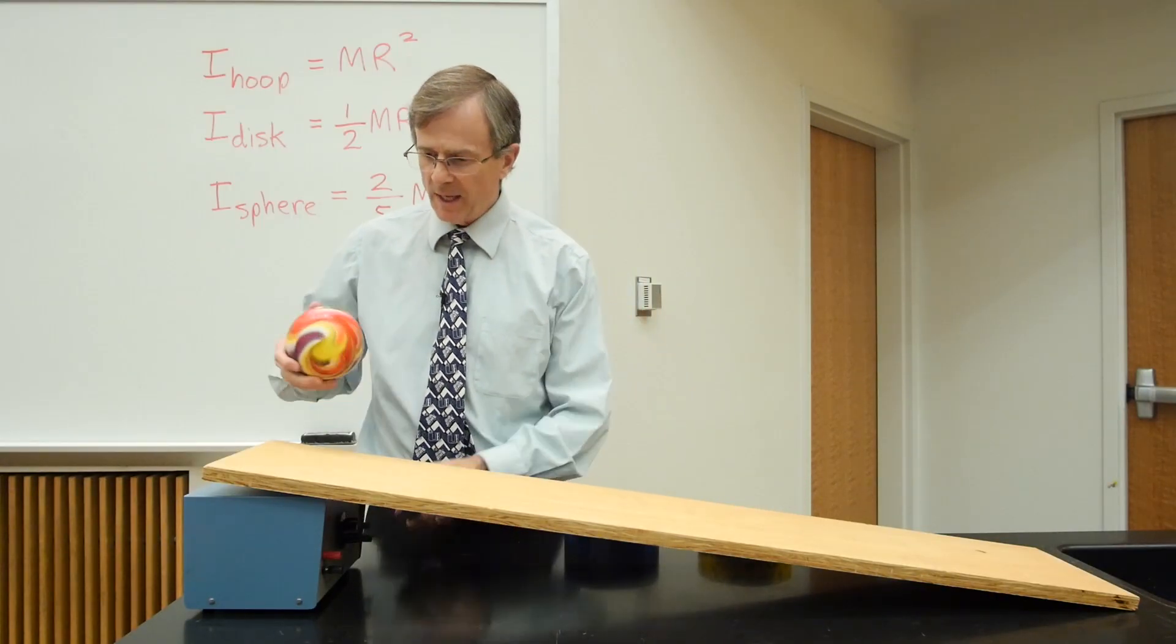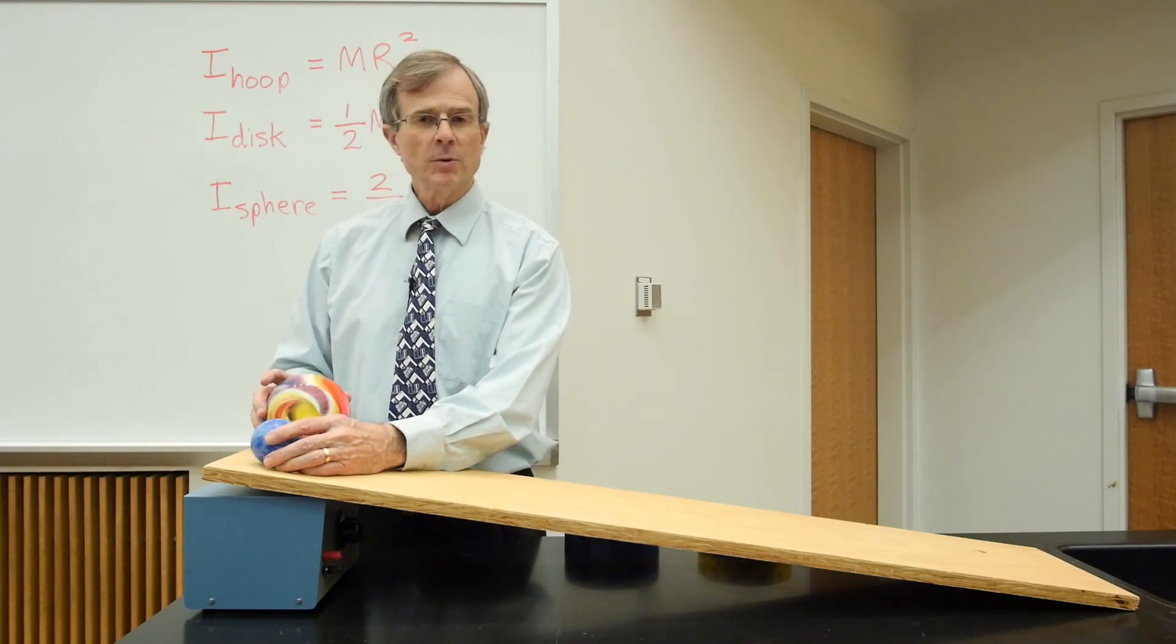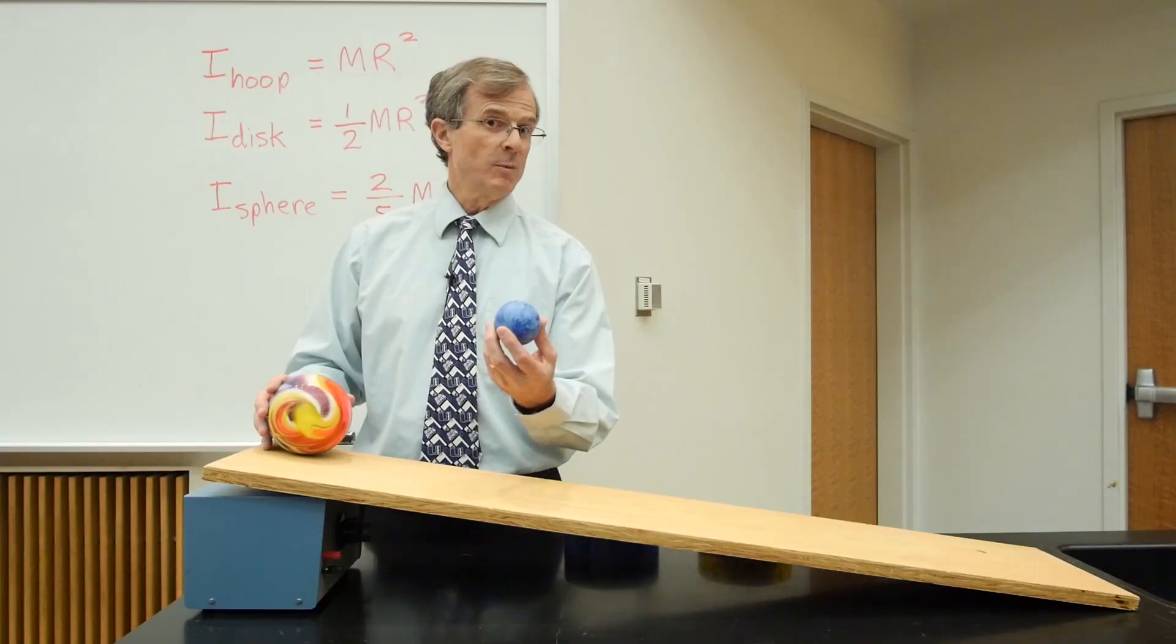And what about this case, where we have two spheres, both of them are solid spheres, and we want to ask, which one's going to win the race? Well, the blue one's going to win, right? Because it has a smaller radius.